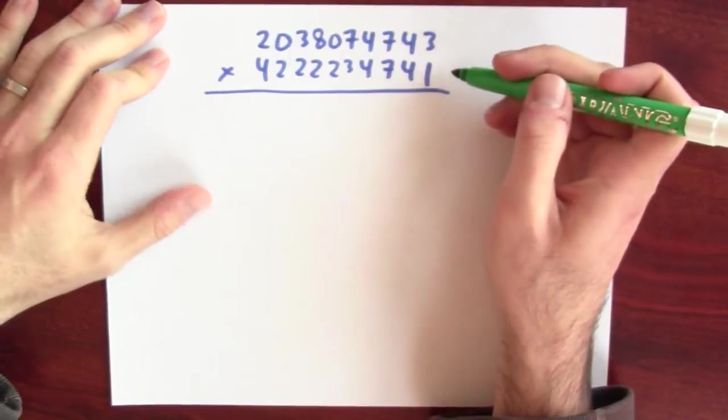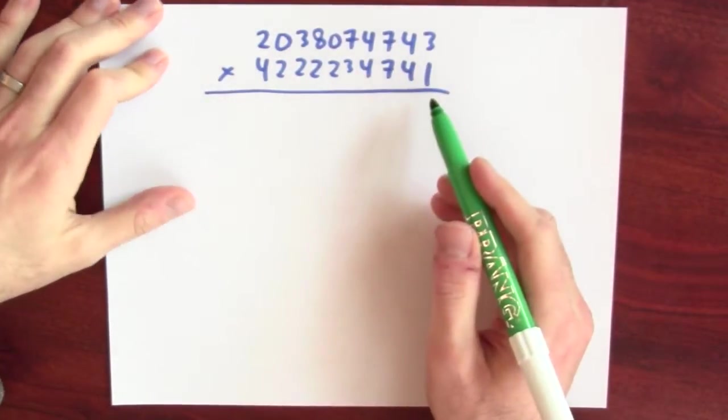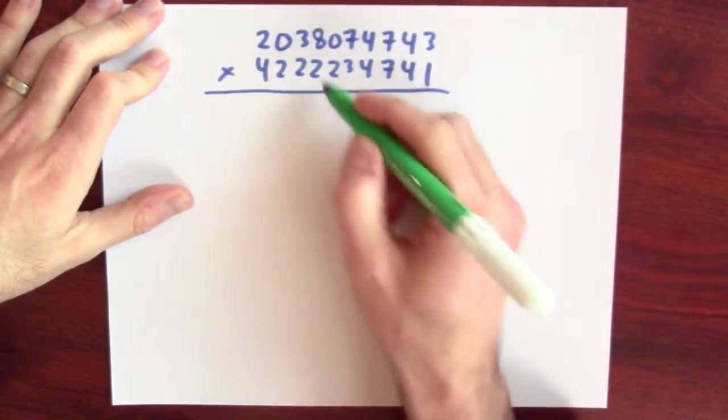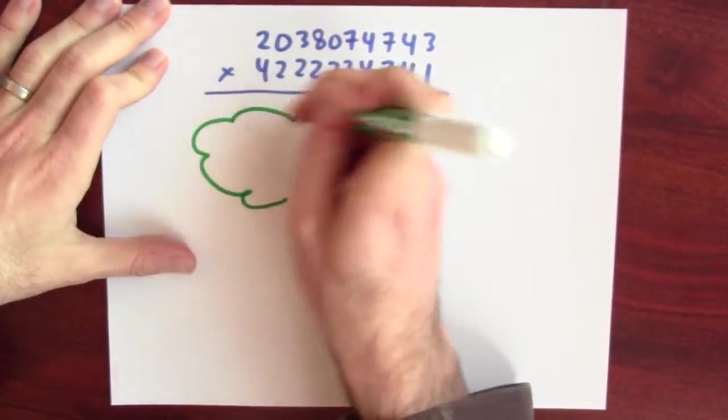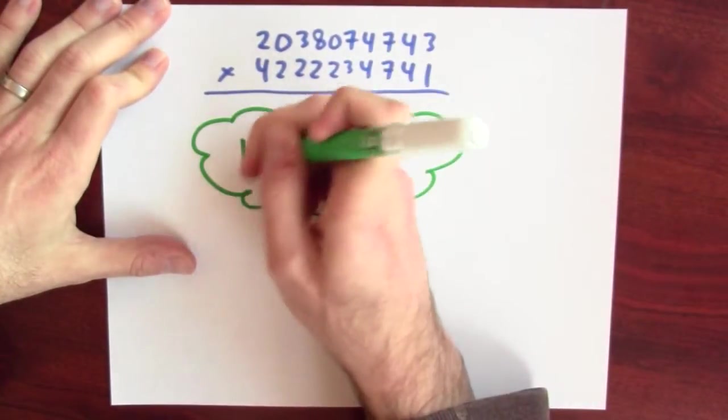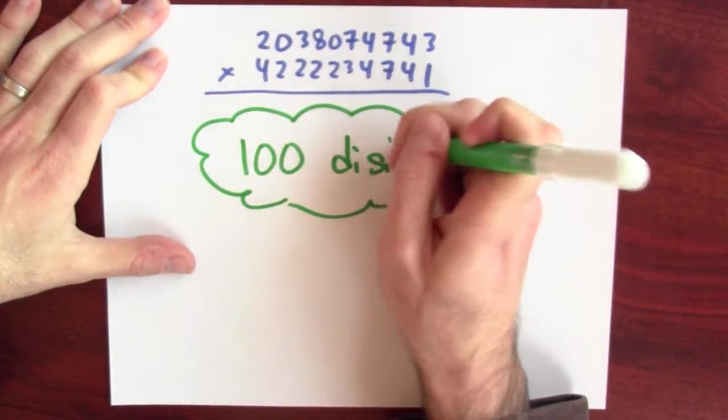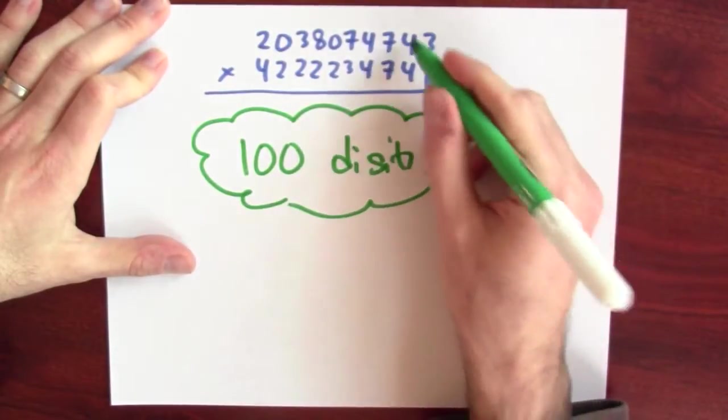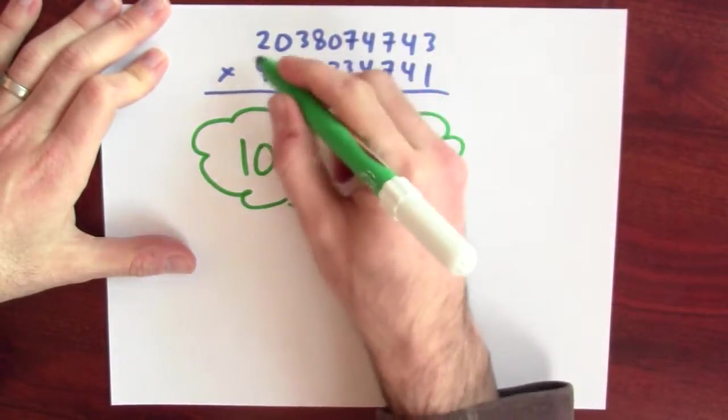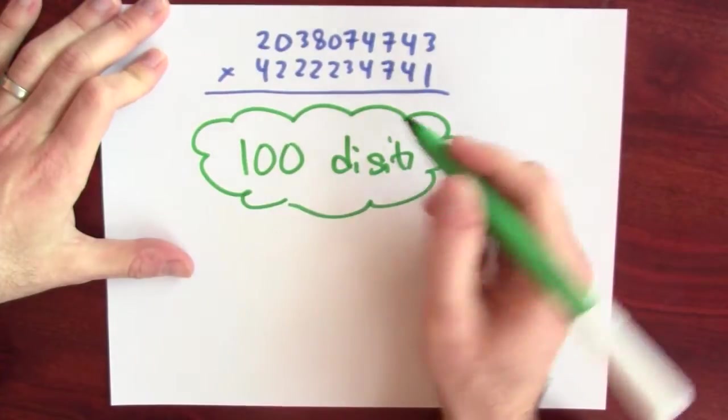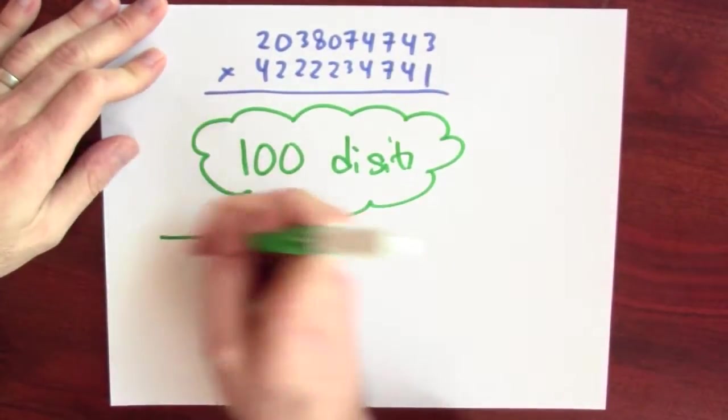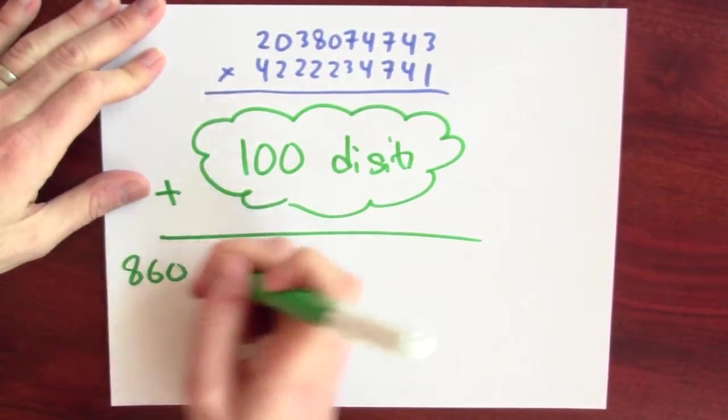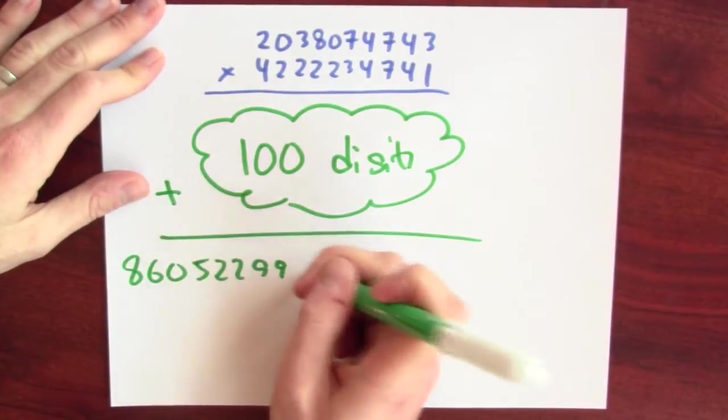What if the two numbers I wanted to multiply each had 10 digits? Well, then I've still got to do all these pairwise multiplications. Down here, I'm going to end up writing 100 digits, at least 100 digits, because for every pair of digits here, I've got to write down at least one digit down here. That's terrible. And then I've got to add all of these things up before I'm able to get the answer.